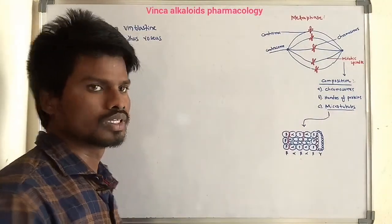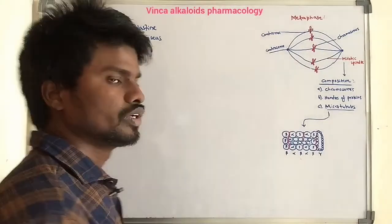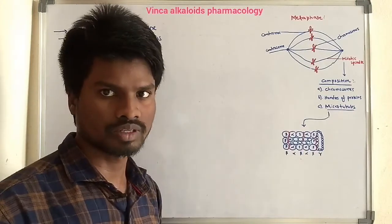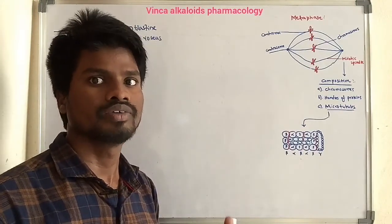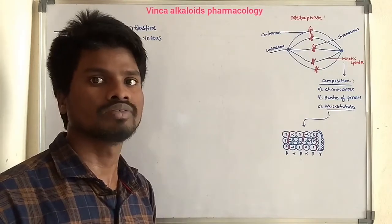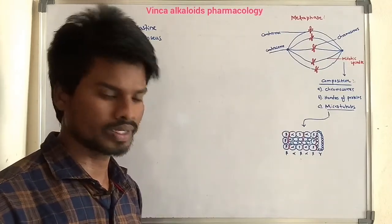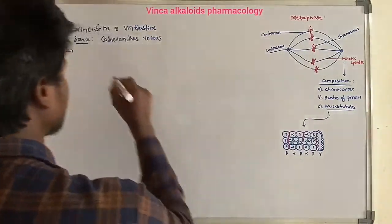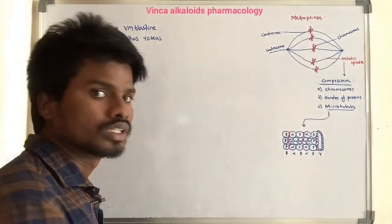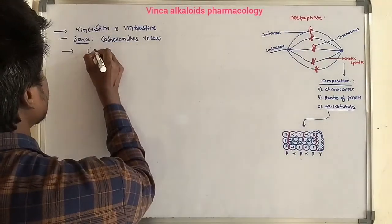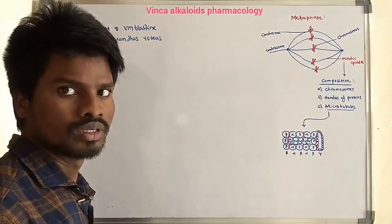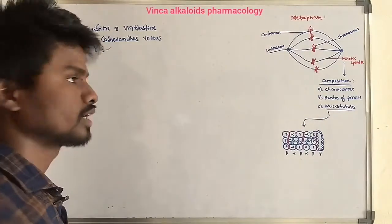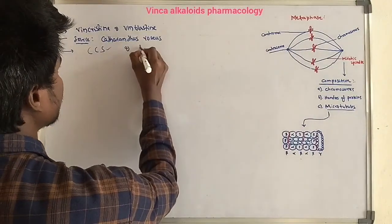Both Vincristine and Vinblastine have the same mechanism of action, but they differ in their anti-tumor activity and toxicity. Both agents are cell cycle specific drugs that act on the M phase — the metaphase — of the cell cycle.